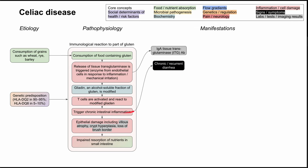Because you have chronic intestinal inflammation, the patient will likely have chronic and recurrent diarrhea, oftentimes triggered by consumption of grains like wheat, rye, or barley. The majority of other manifestations come from malabsorption. When you malabsorb fats, the fats go down into your large intestine and you end up excreting them — a greasy, oily diarrhea called steatorrhea, which exacerbates the diarrhea picture.